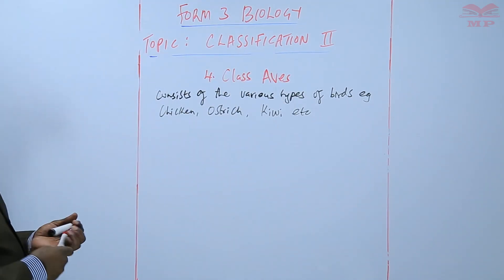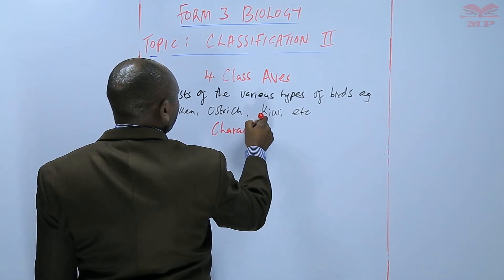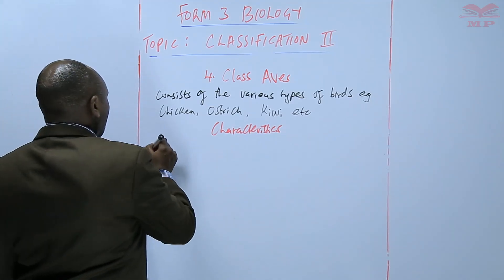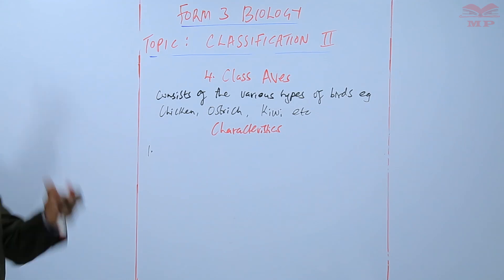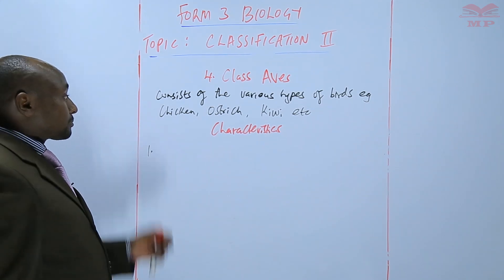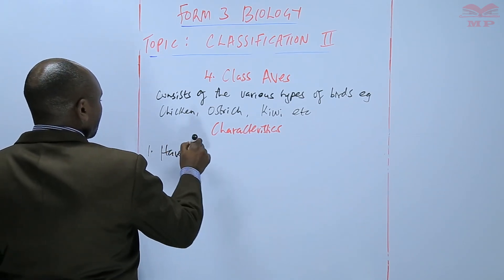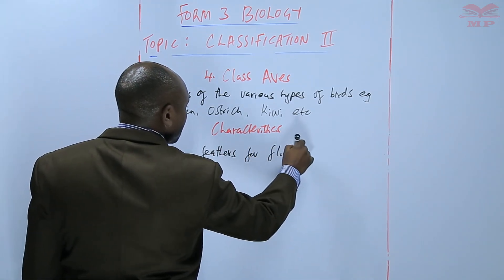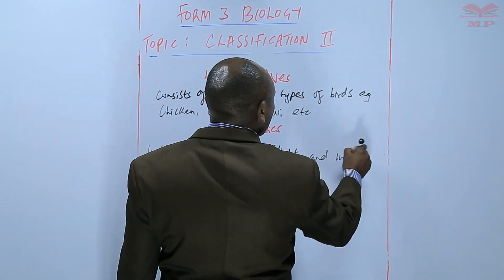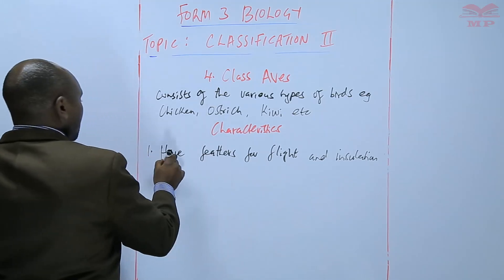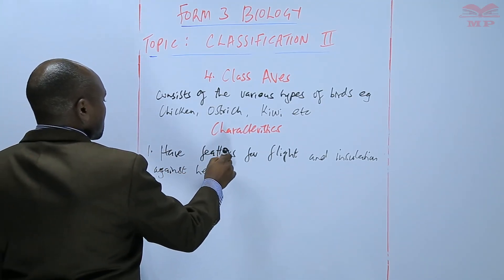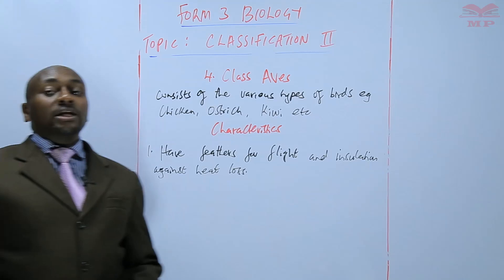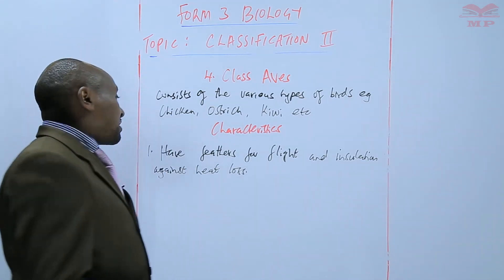We are going to look at the characteristics of this particular class. One of them is that birds have feathers for flight, that is flying, and insulation against heat loss. So the feathers help in flight and at the same time they help insulate the body to minimise heat loss.